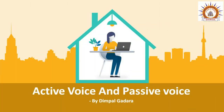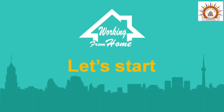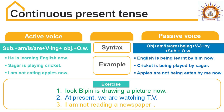Hello everyone, good morning to all. In the previous lecture we studied about active and passive voice in simple tenses. Now let us further study in continuous tense and perfect tense. Let's start with continuous present tense first. The active syntax is: subject plus is/am/are plus V-ing plus object plus other words.